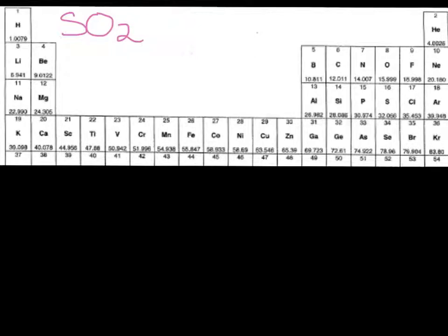Sulfur has six valence electrons. Each of those oxygens also has six. No charge on the molecule, so we don't need to add or subtract any electrons. We're going to end up with 18 valence electrons.